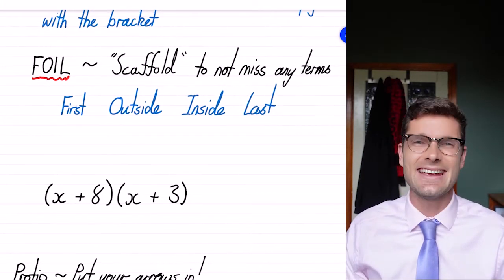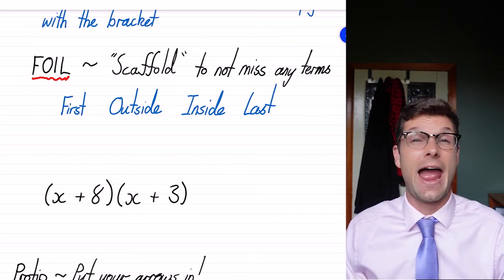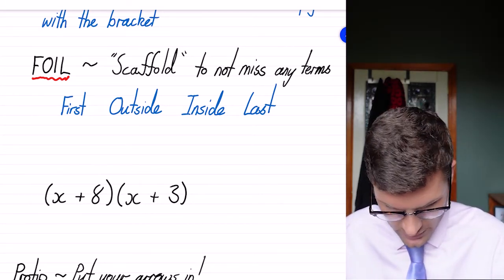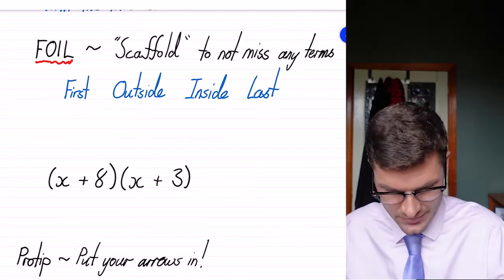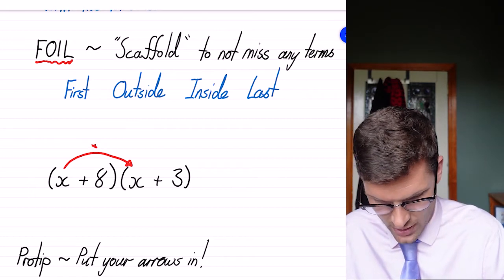So for this one here, we've got x plus eight and x plus three. My big pro tip, again, is please throw your arrows in, because it'll just make it a little bit more helpful. So we've got to do the first one first. So x times x becomes x squared.